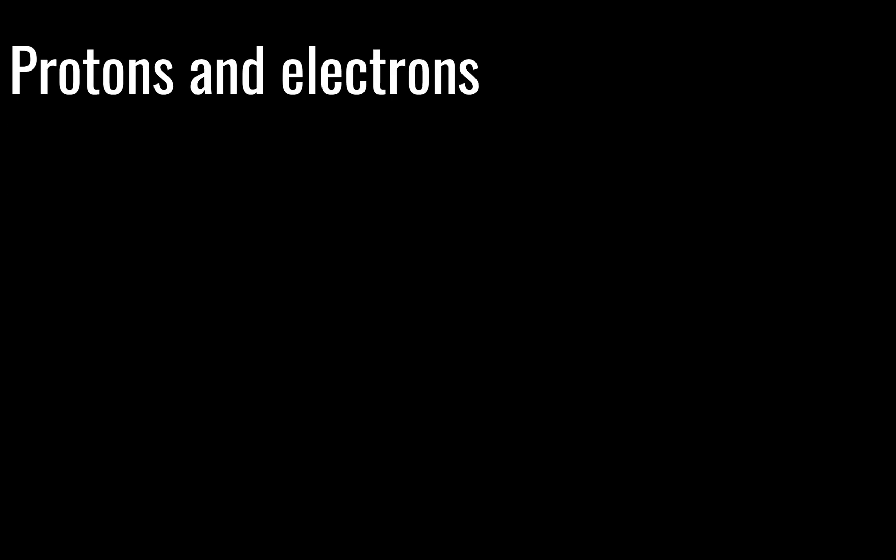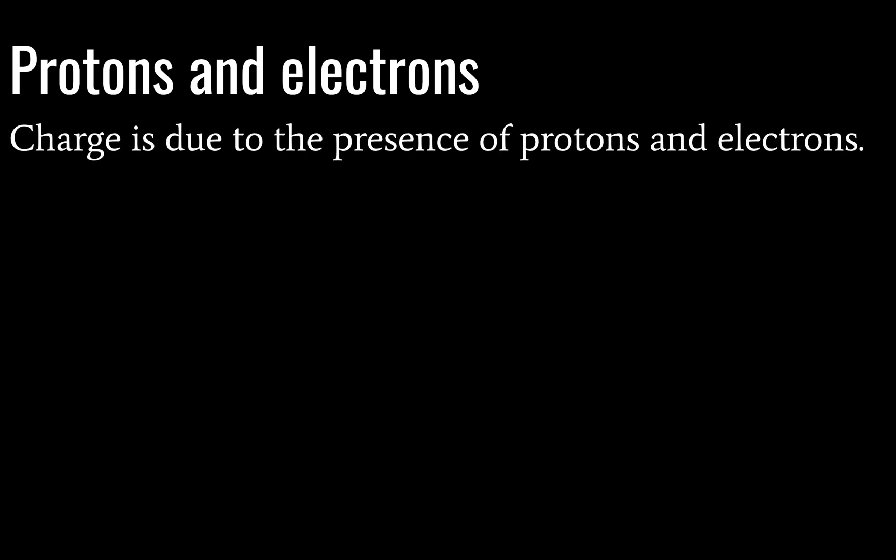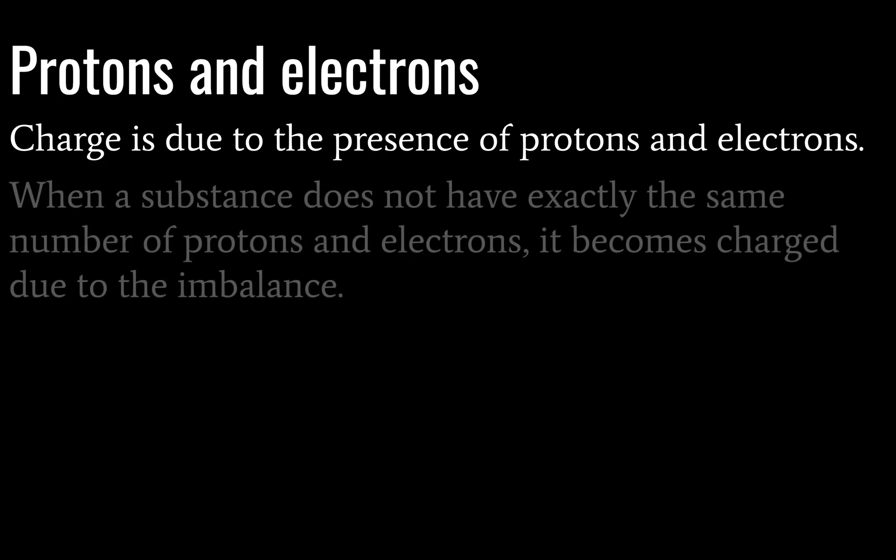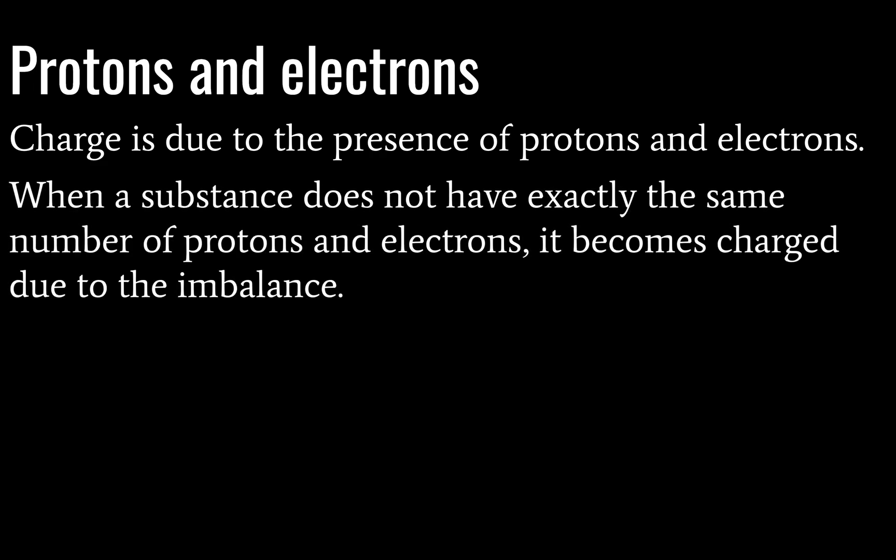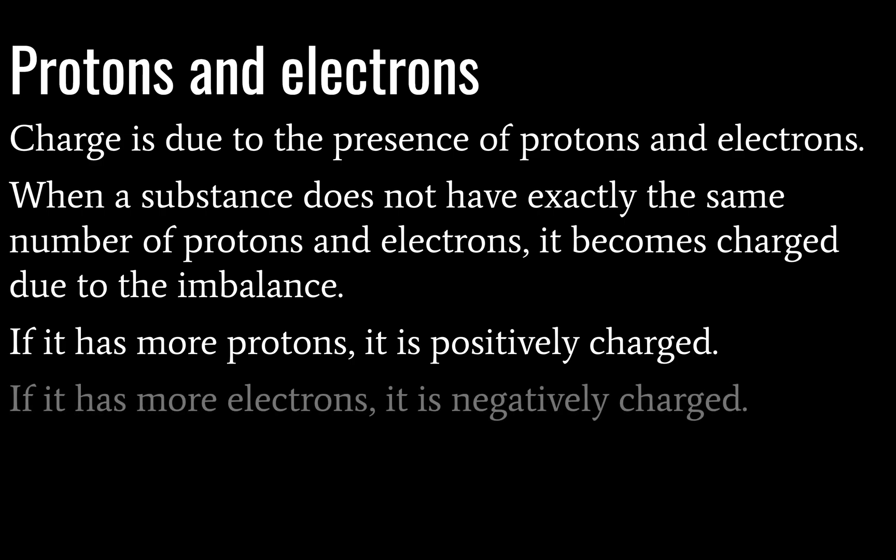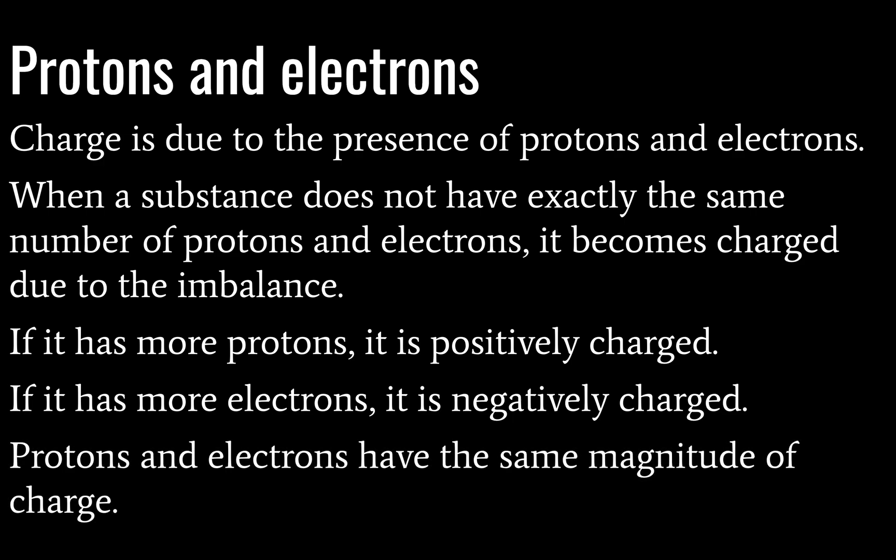So where does charge come from? Answer, protons and electrons. Charge is due to the presence of those things, protons and electrons. And when a substance doesn't have a balanced charge, it then has a charge due to the imbalance. If it has more protons than electrons, it will be positively charged, because protons have a positive charge. If it has more electrons than protons, it will become negatively charged. Protons and electrons have the same magnitude of charge. And that's going to bring us to a property called quantization. And this will come up a lot in modern physics.